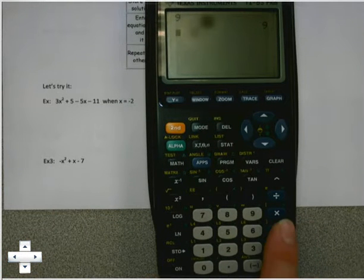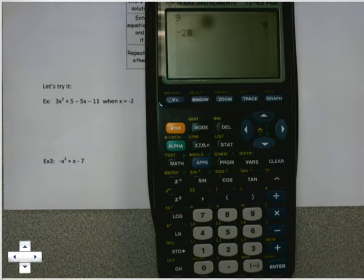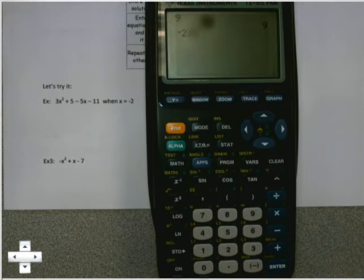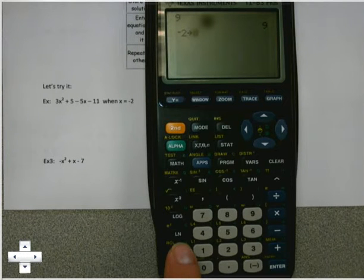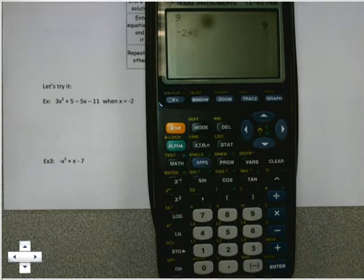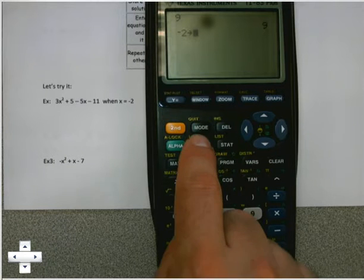The negative down here, instead of using the minus, the minus will get you an error message. So you do negative 2, then you use this store function thing. Oh, STO right here. If I hit that, this little arrow comes up up here, and then I hit this button with x and t and what's called theta and n, and that'll get me my x.